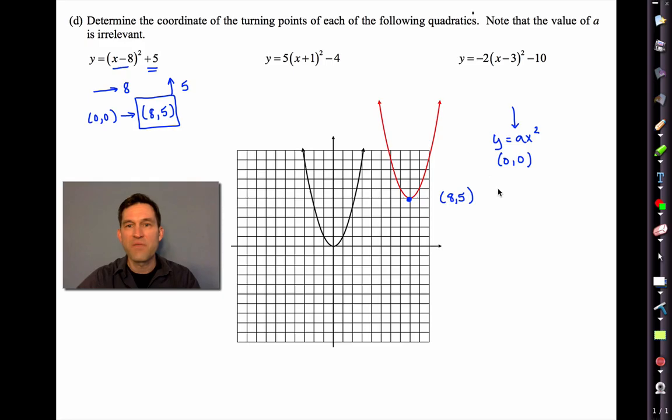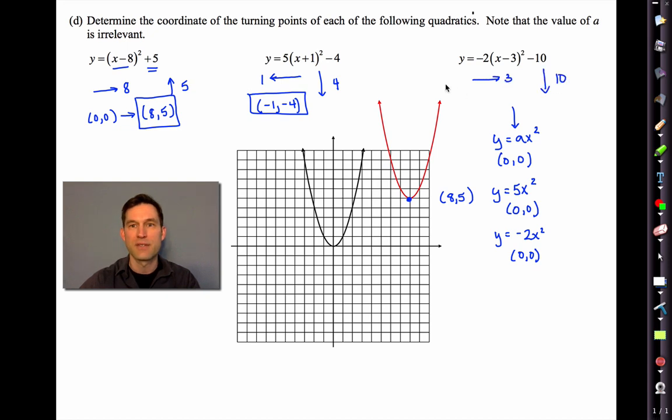Okay? This one again, you know, the 5 out front, no big deal. Because this parabola, y equals 5x², would also have a turning point at 0, 0. So now we've moved it to the left, 1 unit. And we've moved it down, 4 units. So our turning point is now at negative 1, negative 4. Right? Isn't that cool? Likewise, this thing, y equals negative 2x². This one would also have a turning point at 0, 0. But now we've moved it 3 units to the right, 10 units down. So it's got a turning point at 3, negative 10. Isn't that neat? I love it.